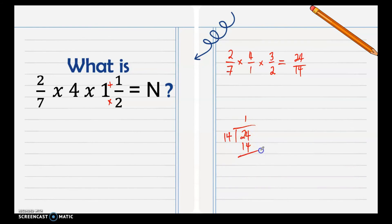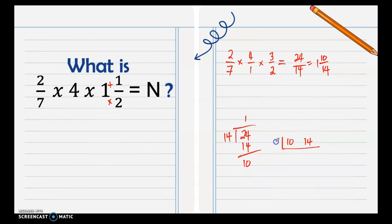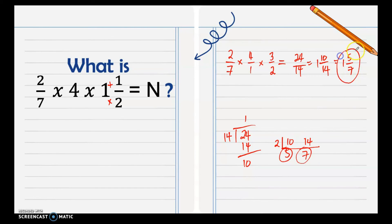Dividing 24 by 14: quotient is 1, remainder is 10, so we have 1 and 10/14. Since 10 and 14 can still be reduced, their common factor is 2: 10 divided by 2 is 5, and 14 divided by 2 is 7. So our final answer is 1 and 5/7.